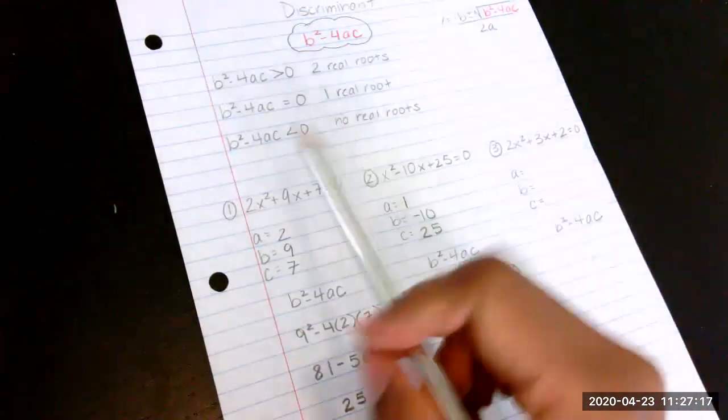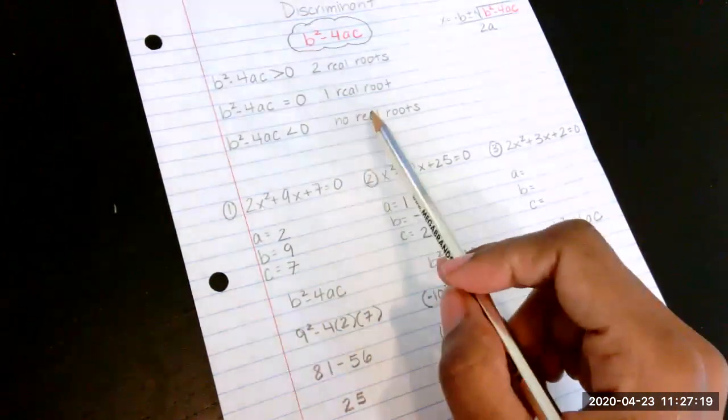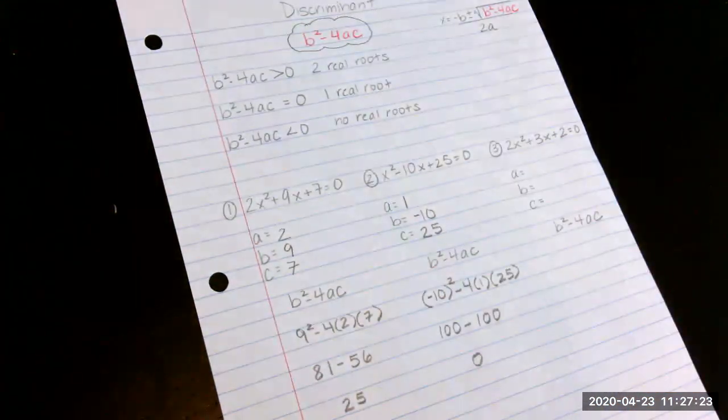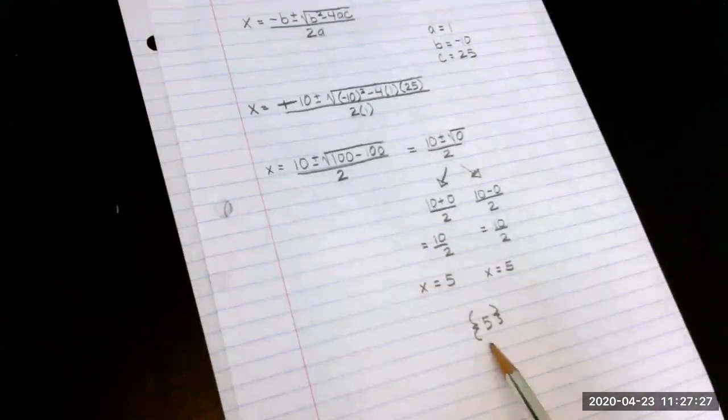So it says when the discriminant equals 0, that means this has one real root. And if we look back to the original problem, when we solve this, we only have one root.